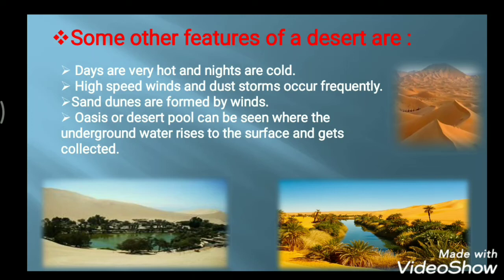These heaps or mounds of sand accumulate and shift from one place to another. An oasis, or desert pool, can be seen where underground water rises to the surface and gets collected. In desert areas, the oasis is the only place where water is available in greater amounts. People stay and a few plants are grown, and some animals live in these oasis areas because only there is a little water and slightly more rainfall.